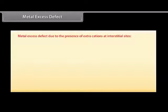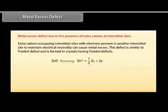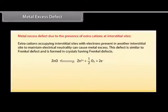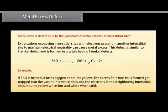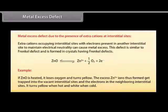Metal excess defect due to extra cations at interstitial sites: extra cations occupy interstitial sites with electrons present in another interstitial site to maintain electrical neutrality. This defect is similar to Frenkel defect and is formed in crystals having Frenkel defects. Example: if ZnO is heated, it loses oxygen and turns yellow. The excess Zn²⁺ ions thus formed get trapped into the vacant interstitial sites, and the electrons into neighboring interstitial sites. It turns yellow when hot and white when cold.